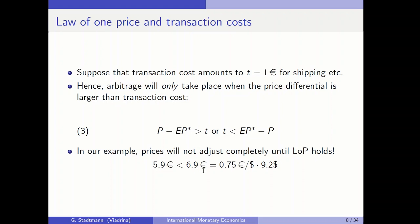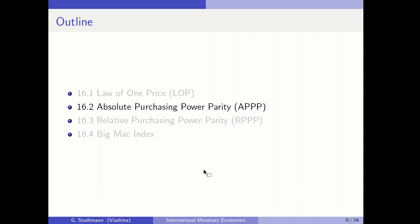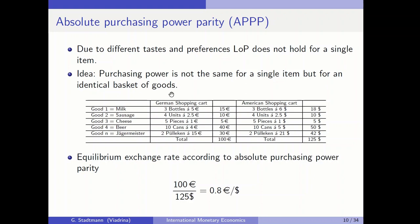When it comes to absolute purchasing power parity, we no longer look at the price of one specific good but at the price of a basket of goods. We compare a basket of goods in Euroland with the price of a basket of goods in the US. A basket of goods is like a shopping cart: in a German supermarket you buy 3 bottles of milk at 5 euros, 4 units of sausage at 2.5, 5 pieces of cheese at 1, 10 cans of beer at 4, and 2 small bottles of Jägermeister at 15.